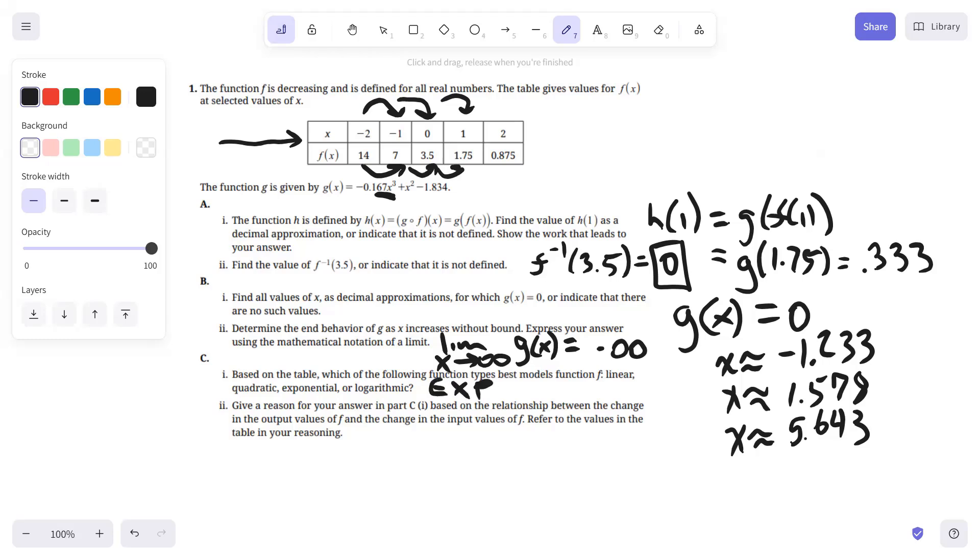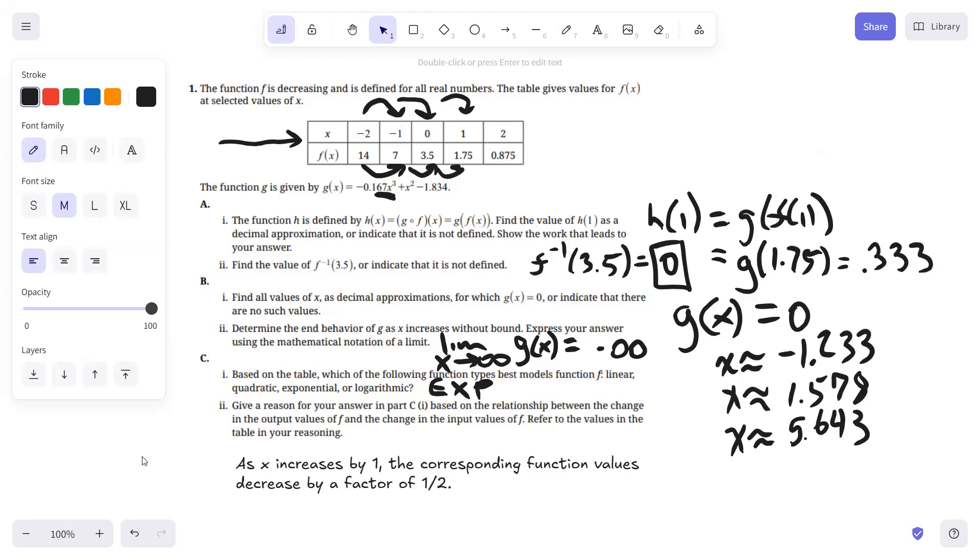And then give a reason for our answer there. We basically say that as X increases by 1, the corresponding function value decreases by a factor of 1 half. So there it is written out for you in a concise statement. And that's it for question number one.